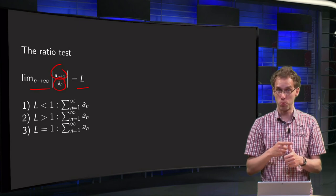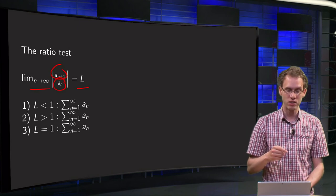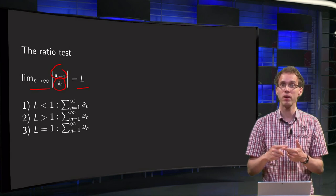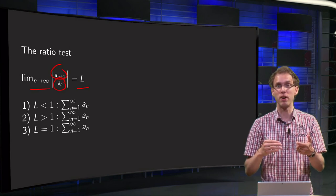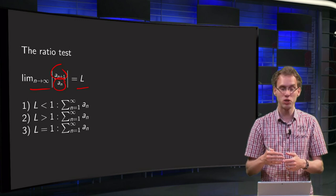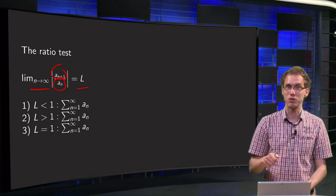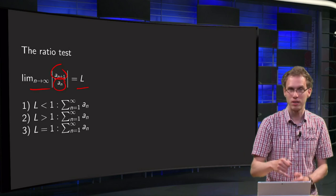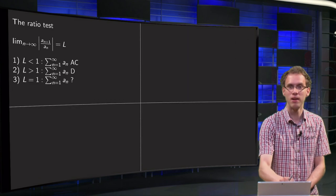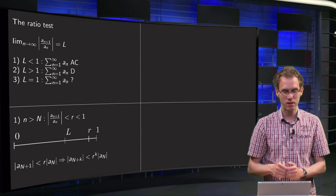Either your L is smaller than 1, in that case, the series converges. Or your L is bigger than 1, in that case your a_{n+1} will be bigger than your a_n all the time, so you will already guess it is going to diverge. Or your L equals 1, well, then your a_{n+1} is approximately as big as your a_n. So let us see exactly what happens.